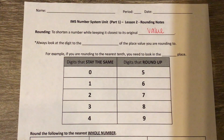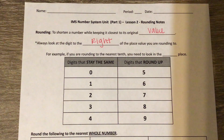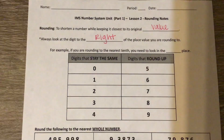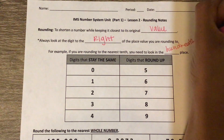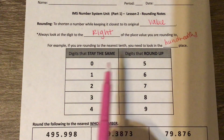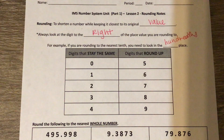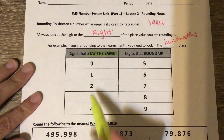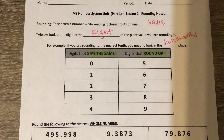We always want to look at the digit to the right of the place value we're rounding to. For example, if you're rounding to the nearest tenths, we're going to look to the right at the number in the hundredths place. That digit — we're deciding: are we going to keep it the same or round up? It stays the same when the value is 0, 1, 2, 3, or 4. It rounds up when it's 5, 6, 7, 8, or 9.